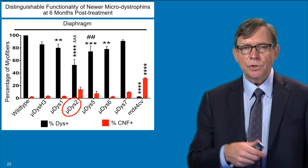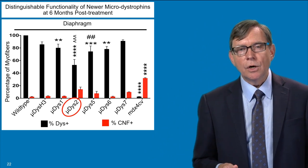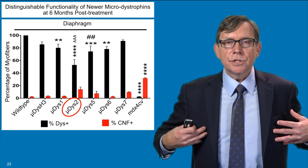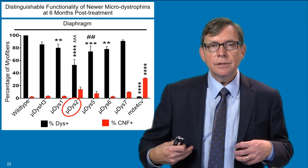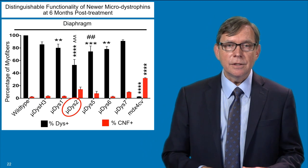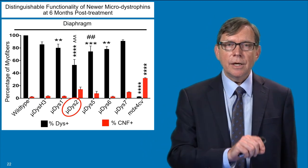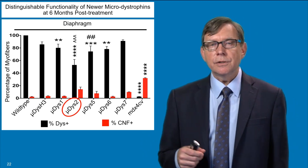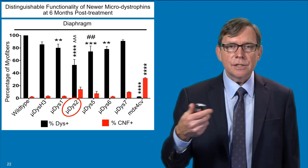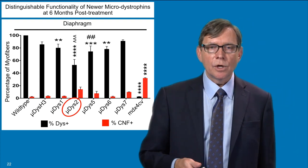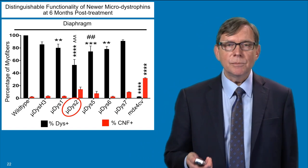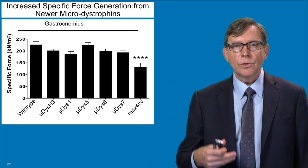We also like to look at the diaphragm. The diaphragm muscle is the major breathing muscle in humans, and it's the muscle that is most severely affected in the disease. So we not only compare how well these micro dystrophins work in the limbs but also in the breathing muscles. Some of these different micro dystrophins work better than others, but we've come up with a few that seem to work particularly well that we're moving forward with.